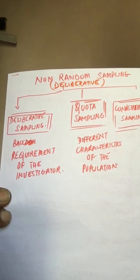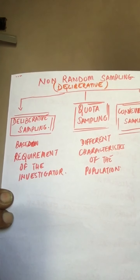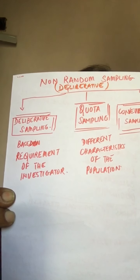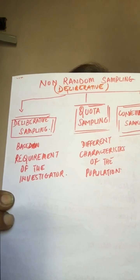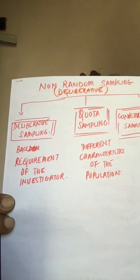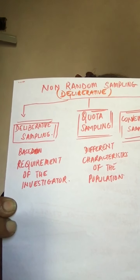The methods are deliberative sampling, quota sampling, and convenience sampling. Non-random sampling itself is sometimes known as deliberative, but we also have deliberative sampling as a specific method.